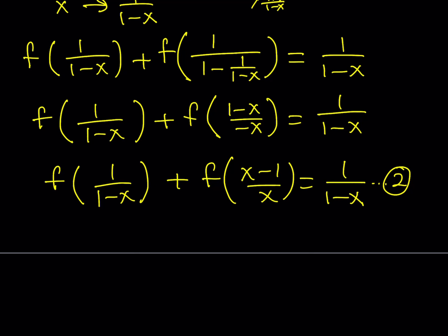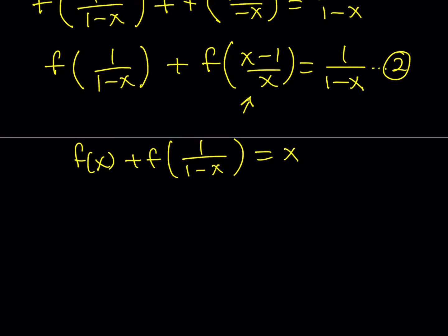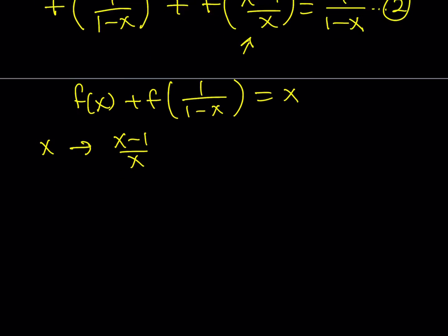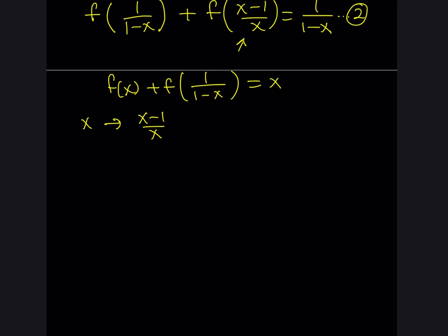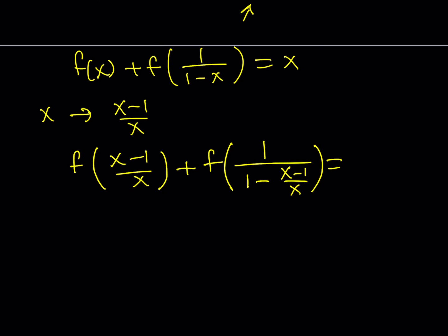We do need a third equation. Notice that we got a new term, (x-1)/x, so it makes sense to replace x with that in the original equation. When you do, you get f((x-1)/x) + f of 1 over (1 minus (x-1)/x) on the left-hand side, and (x-1)/x on the right-hand side.